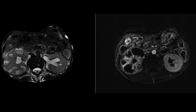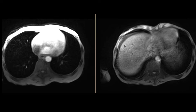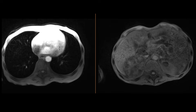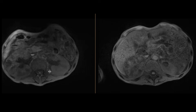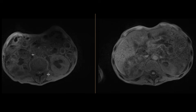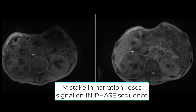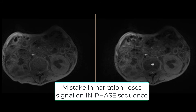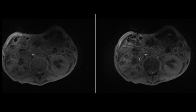On the in and out-of-phase sequences, those areas lose signal on the out-of-phase sequence. They are T1 hypo-intense on both, but darker on the out-of-phase sequence, suggesting that they are foci of gas — again going along with the narrative that this is extensive, severe pyelonephritis with numerous renal abscesses.